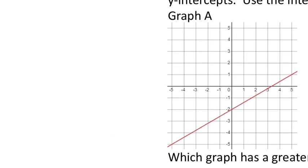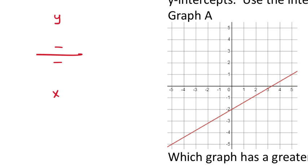Let's focus on graph A. Setting up the slope formula: always subtraction top and bottom, fraction line for division, x's on the bottom and y's on the top. I don't have to use the interval for this straight line. I'll use the y-intercept: the red line crosses the y-axis at negative 2, giving ordered pair (0, -2). X = 0 goes on the bottom, y = negative 2 goes on top.